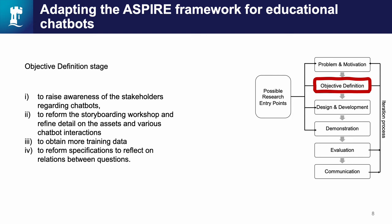A further objective was to obtain more training data, as training data needs multiple users in order to be efficient and valid. Furthermore, alternative sentences should be provided in the training of the chatbot by experts, and specifications should be reformed to reflect on the relations between questions. The traditional specification describing and using specific texts and assets needs to be connected with relevant triggers or questions by the user.